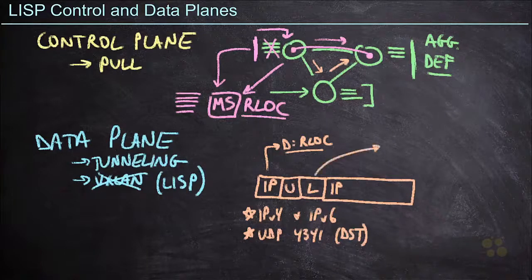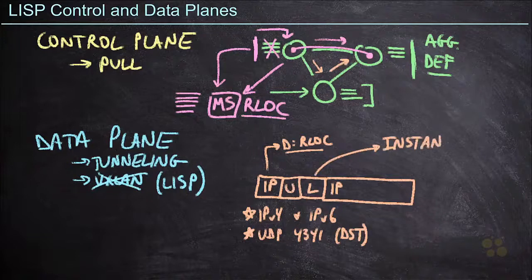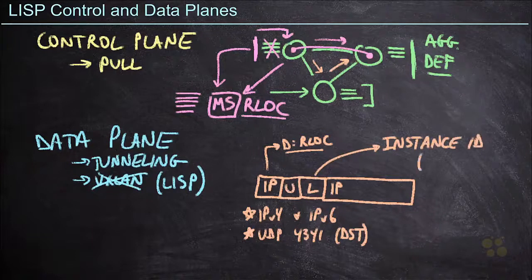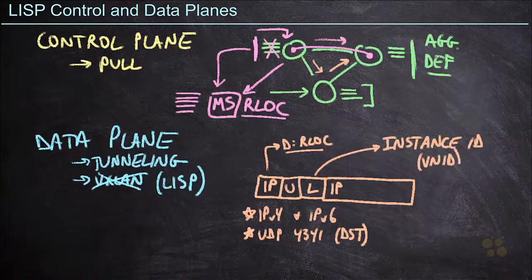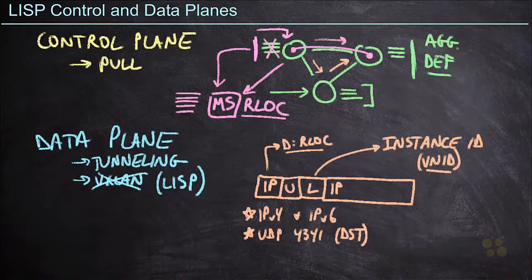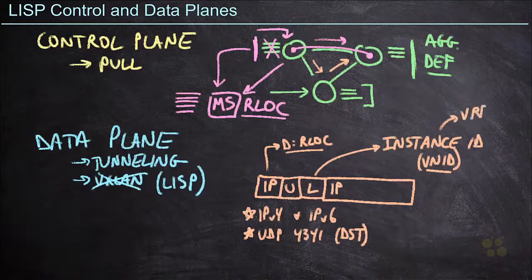Now, inside this LISP header, we have this concept of an instance ID. This instance ID has the same role as that virtual network identifier that we're used to seeing inside of a VXLAN tunnel. And its role, just like with the VNID, is to differentiate between different virtual routing and forwarding instances, or VRFs.